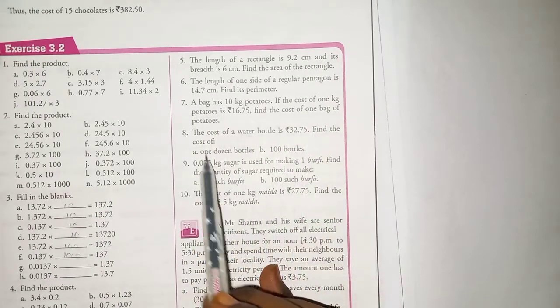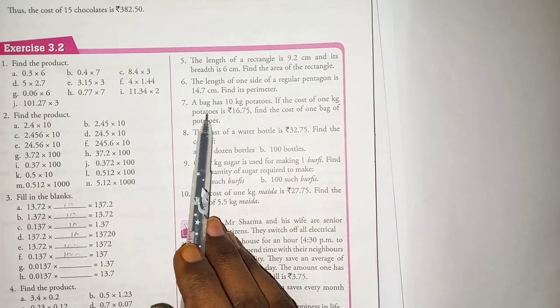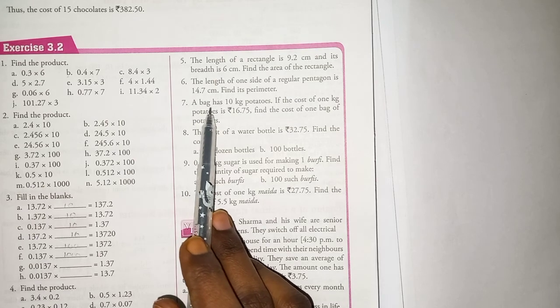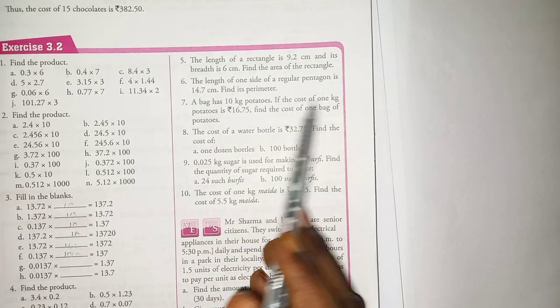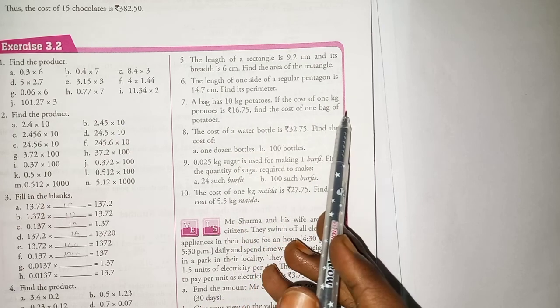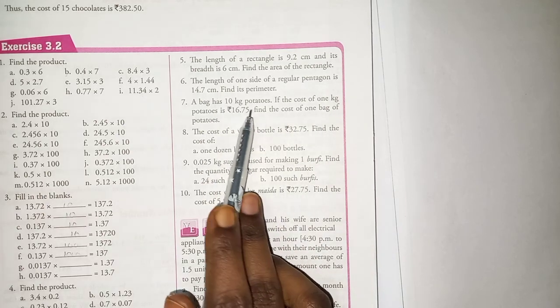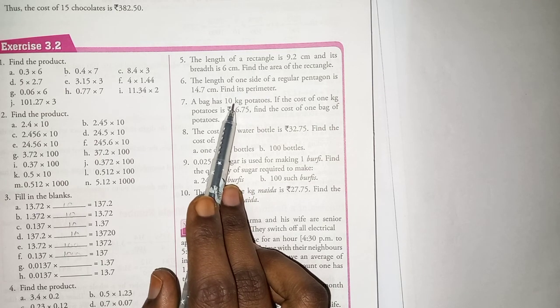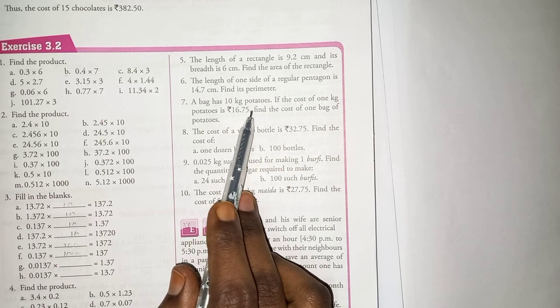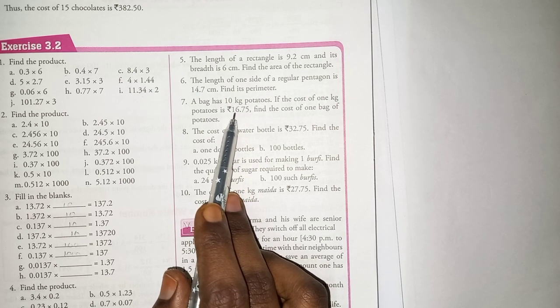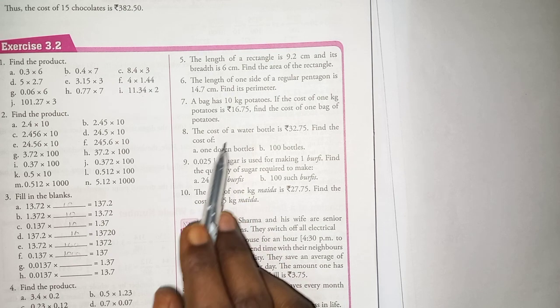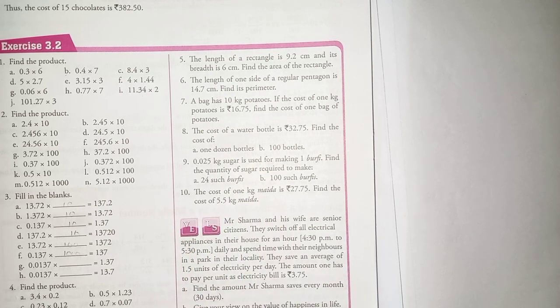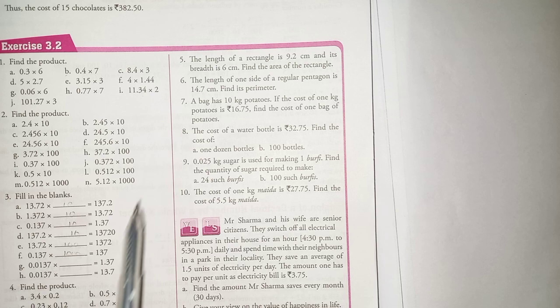The remaining all problems are multiplication of two numbers. A bag has 10 kg potatoes. If the cost of 1 kg is 16.75, find the cost of 1 bag of potatoes. 1 bag of potatoes is having 10 kg. So, obviously, you have to find the value for 10 kg potatoes. 16.75 into 10. How much it will become? 167.5. And all the questions are just multiplication problems only. So, do all these questions. Solve all these questions in maths homework. Bye for now.